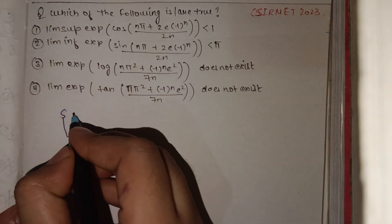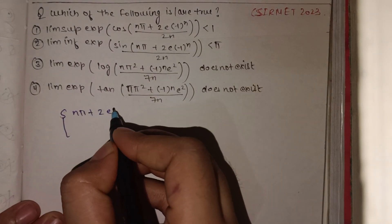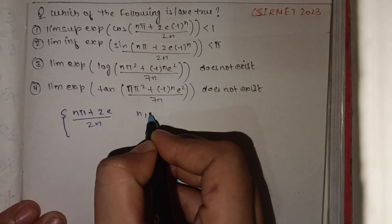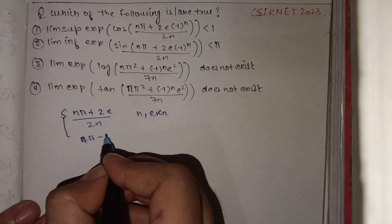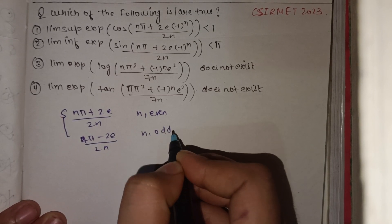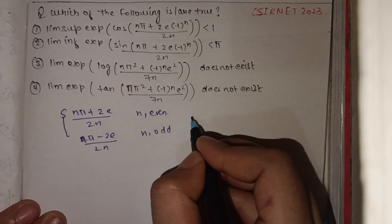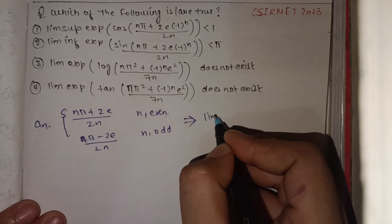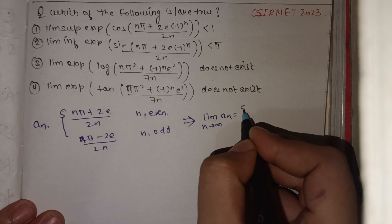When n is even, the term becomes (nπ + 2e) / (2n), and when n is odd, it becomes (nπ - 2e) / (2n). Now if we have a_n defined this way, we need to find the limit as n tends to infinity of a_n.